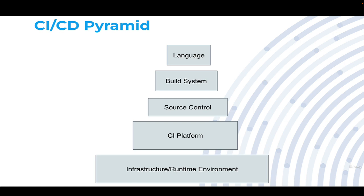The CI platform pulls from source control to find what needs to be built. Above that, we have our build system — a technology like NPM, Maven, or Gradle — which takes source code in the given language and turns it into some type of artifact or delivers it in some manner. At the very top, we have our language, which determines what we're building, how we're archiving it, and how we get it into whatever runtime environment it needs to function inside.